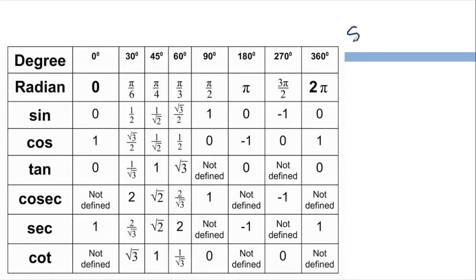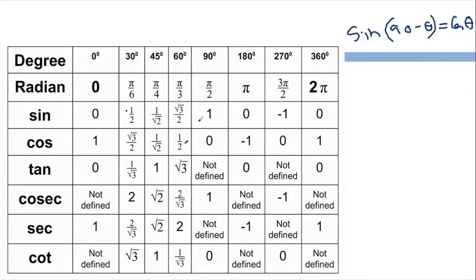So applying this: sin(90 minus theta) equals cos theta. For example, if theta is 30 degrees, then sin 60 degrees equals cos 30 degrees. And cos(90 minus theta) equals sin theta, so cos 60 degrees equals sin 30 degrees. These complementary angle relationships are very useful.